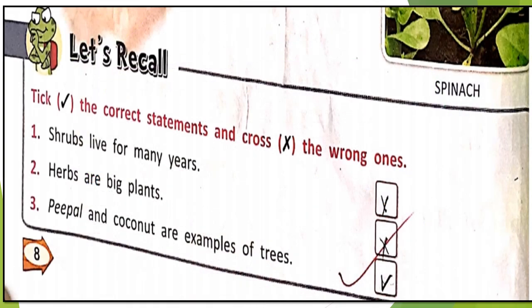Down below they have given a question: tick the correct statement and cross the wrong one. If the statement is correct, tick it; if wrong, cross it. Number one: shrubs live for many years. Shrubs are bushy plants with woody stems — they live for a few years, not many. So this statement is wrong.